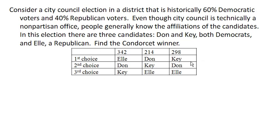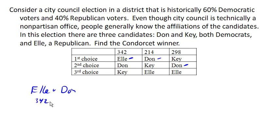Let's find the Condorcet winner. We need to compare each pair of candidates. Comparing L to Don: L is preferred by 342 voters, and Don is preferred by all the rest, which is 512. So Don is preferred in that comparison.